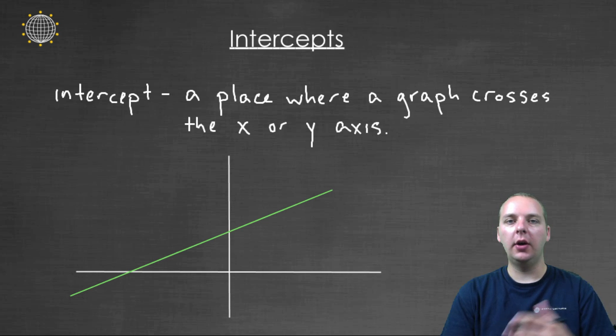An intercept is a place where a graph will cross over either the x-axis or the y-axis. And these graphs can either be of linear equations like this, or really of any curve. But in this video we're primarily going to stick to graphs that are straight lines.